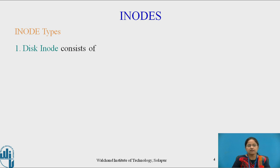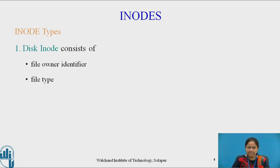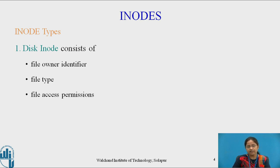First, we are going to see what a disk inode contains. A disk inode consists of: file owner identifier — file owners can be an individual owner, group owner, or other users, and this is defined in the file owner identifier field. File type — the type of file may be a regular file, a device file (which may be a block special file or character special file), a directory, or a FIFO (first in, first out), which is also called a pipe. File access permissions — the file is protected by owner, group owner, or other users, with different access permissions such as read, write, and execute. Since a directory is also created as a file, execute permission on a directory means that directory can be searched.